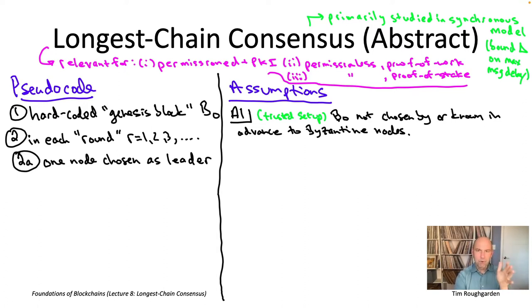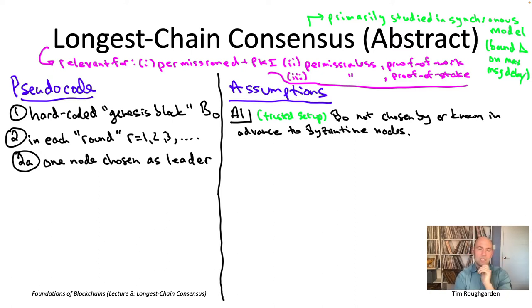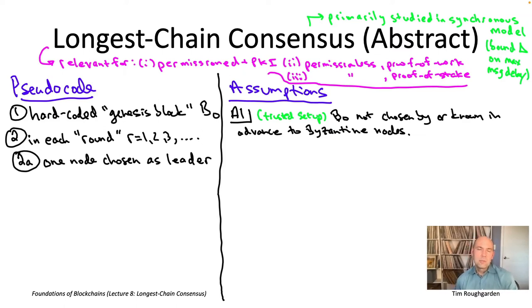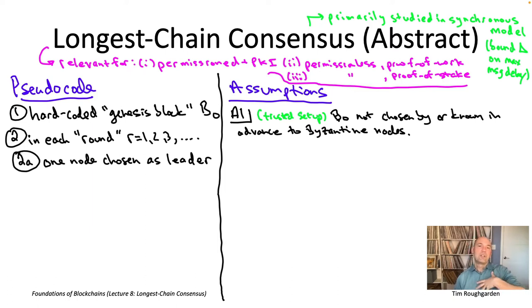In proof of work blockchains, the idea is similar, but rather than sampling a node with probability proportional to locked-up stake, you select a node with probability proportional to the fraction of overall computational power they contribute. There isn't a notion of time steps — you just have would-be block producers trying to solve hard crypto puzzles, and whoever solves it first becomes the leader of the ensuing round.